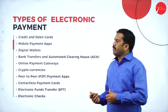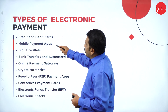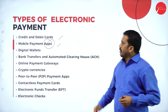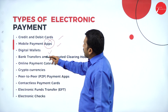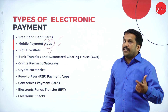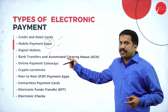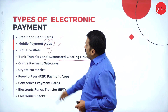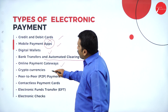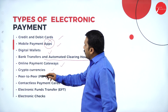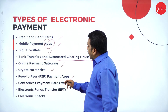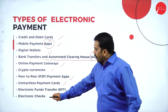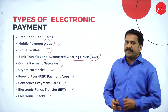Types of electronic payment: credit and debit cards, mobile payment applications like Google Pay and PhonePe, digital wallets like Airtel Money and Amazon Pay, bank transfers, Automated Clearing House (ACH), online payment gateways, cryptocurrency, P2P payment apps, contactless payment cards, electronic fund transfers, and electronic checks.